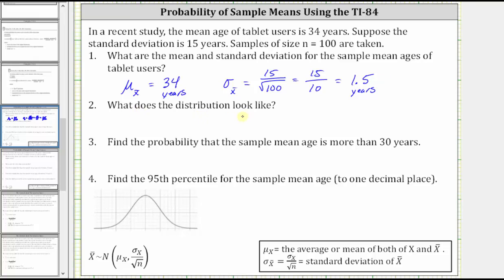Number two, what does the distribution look like? We know from the central limit theorem, the distribution of the sample means tends to a normal distribution. And again, we know this from the central limit theorem.